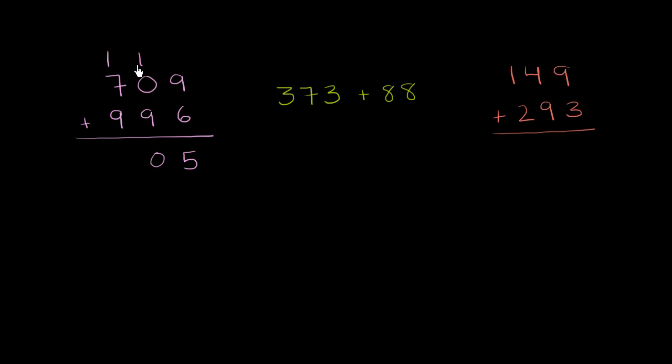Now, what does that really mean? Well, this is 1 ten plus 0 tens plus 9 tens, which is 10 tens. 10 tens is 100. Or another way to think about it, it's 100 and 0 tens. That's all that carrying represents.